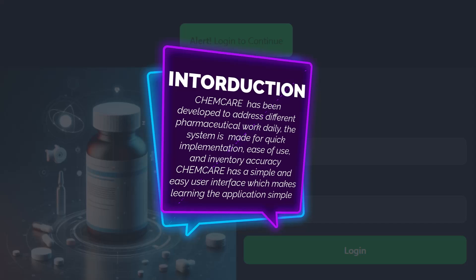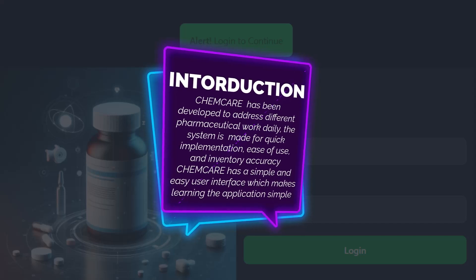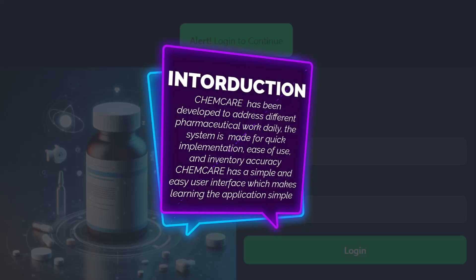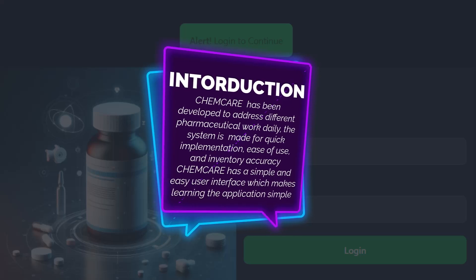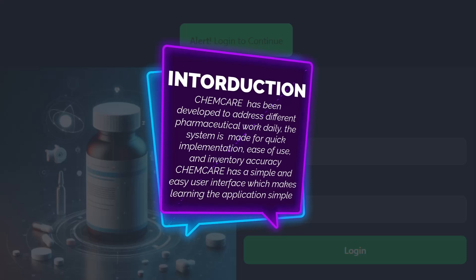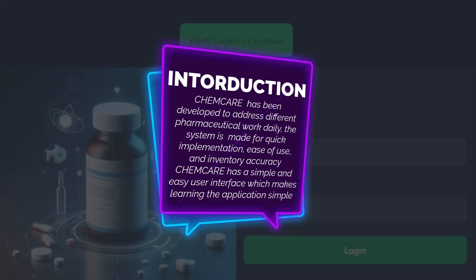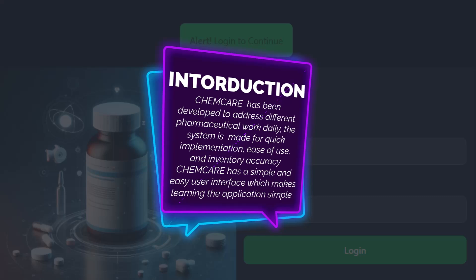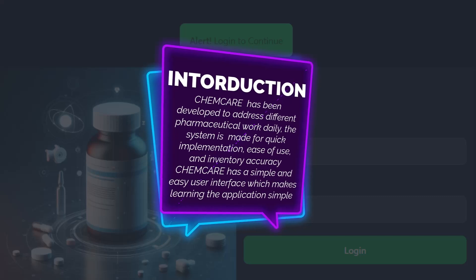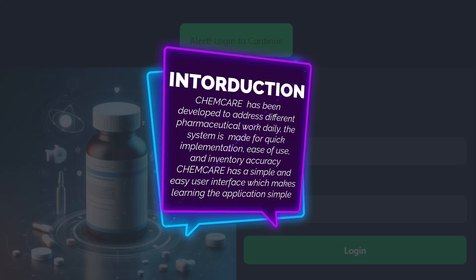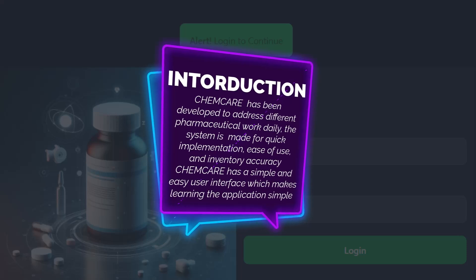Hello everyone. In today's video I'll be showcasing a pharmacy management system which I've dubbed ChemCare. ChemCare has been developed to address different pharmaceutical work daily. The system is made for quick implementation, ease of use, and inventory accuracy. It has a simple and easy user interface which makes learning the application straightforward. I'll provide timestamps so you can skip to the most interesting part.